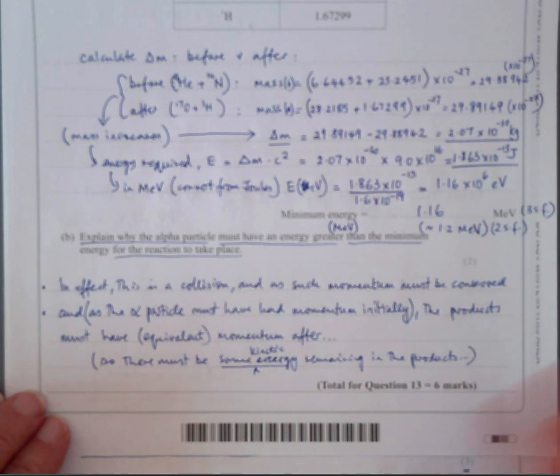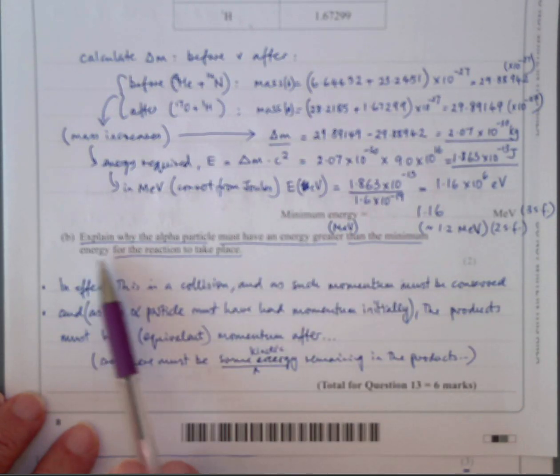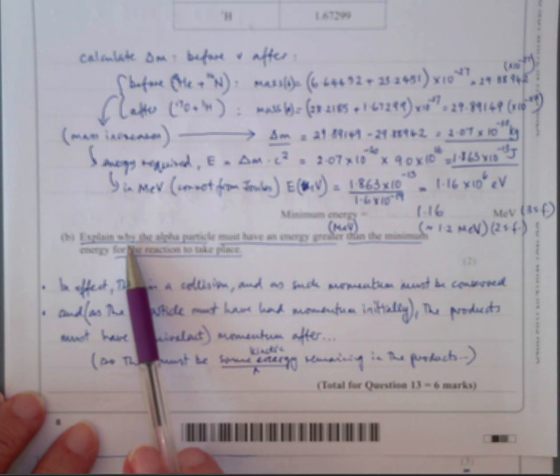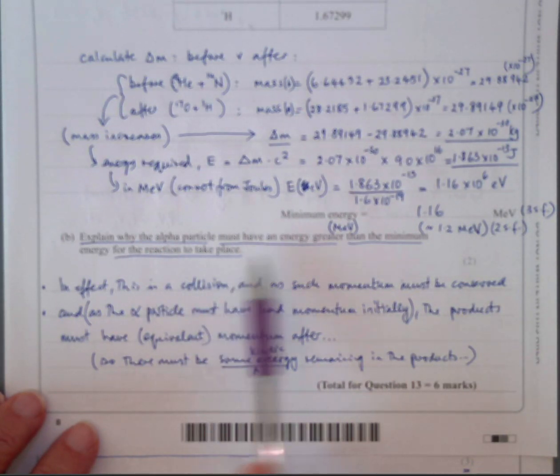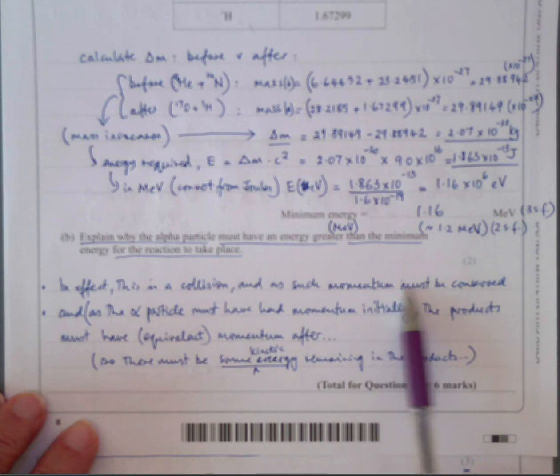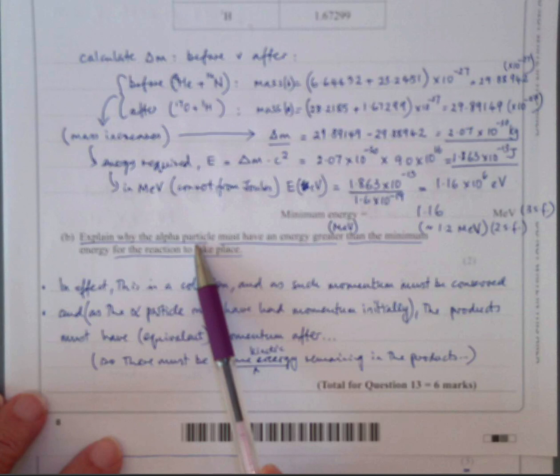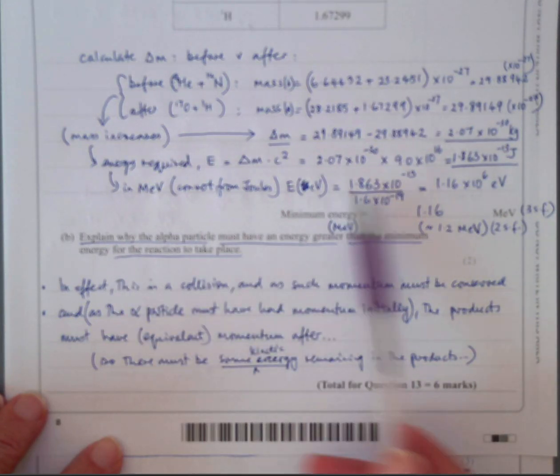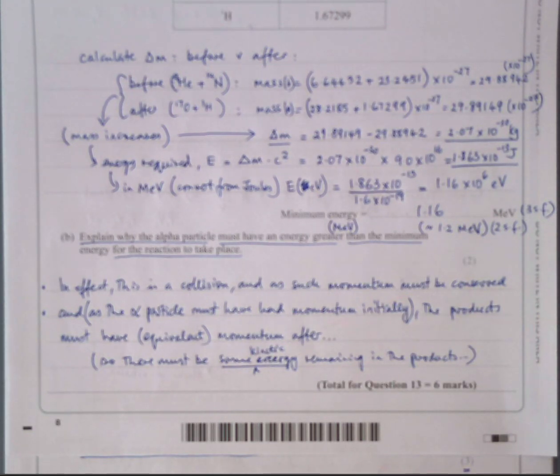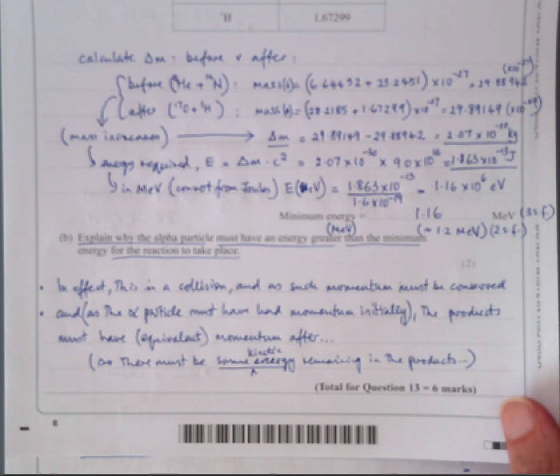So to keep going, hopefully the focus will come back. It says explain why, you've presumably got this in front of you, the paper, explain why alpha particles must have an energy greater than the minimum energy for the reaction to take place. Well remember, the alpha particles were coming in to collide with nitrogen, so they came in with some momentum initially. So that momentum will continue afterwards and take away some of the energy. In effect, this is a collision, I've written, and as such momentum must be conserved. And as the alpha particle must have had momentum initially, the products must have an equivalent of momentum afterwards. So there must be some kinetic energy remaining in the products, which means that the alpha particle must have an energy greater than the minimum energy required that we calculated here because some of the energy will go into the kinetic energy of the products rather than in just making the mass.